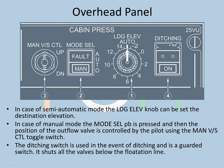The last switch on the overhead panel is the ditching switch — a guarded flap switch used in an emergency where you have to ditch the aircraft. You lift the guard and press ON. It shuts all valves below the floatation line, including the outflow valve, ram air valve, avionics ventilation backflow valves, and vents, so that water doesn't seep into the aircraft, giving you a little more time to float.